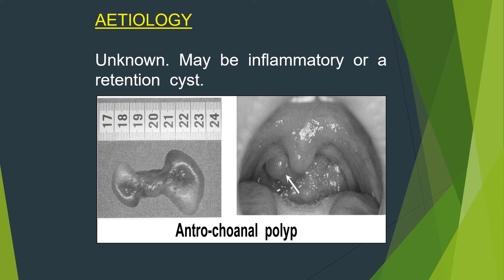The antrochoanal polyp has two parts: a small maxillary part and a nasopharyngeal part. The difference in size between the two parts is due to the difference in size between the nasopharynx and the maxillary sinus. The polyp can come out of the nasopharynx into the oropharynx.